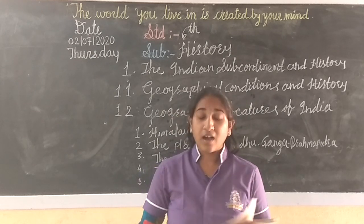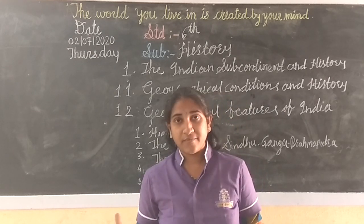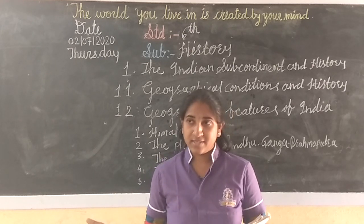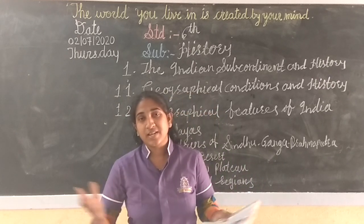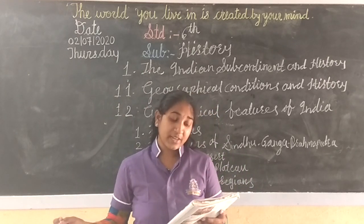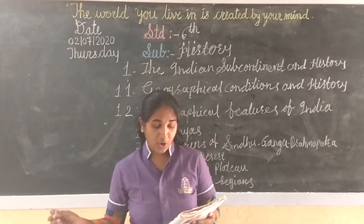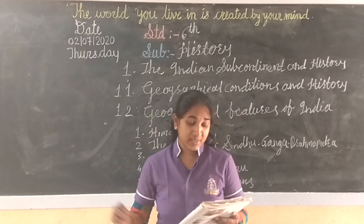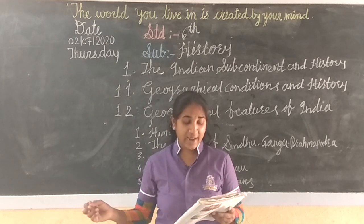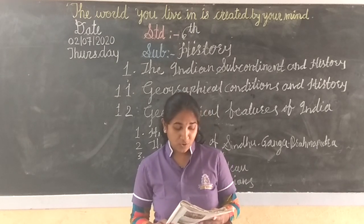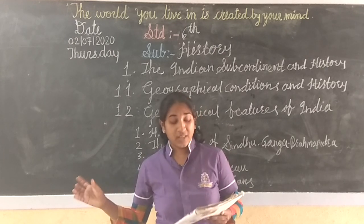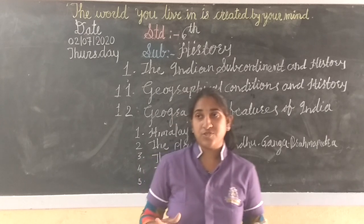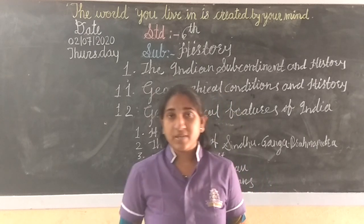Our country India is extended far and wide. In the North we have the Himalayas, to the East the Bay of Bengal, to the West the Indian Sea, and to the South the Indian Ocean. But except for the islands of Andaman and Nicobar, the rest of the country is continuous, and most of the country's people live there.